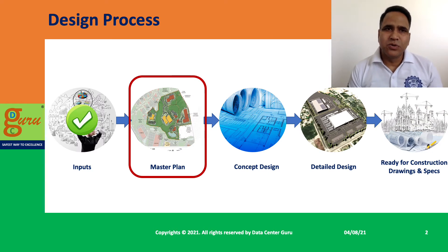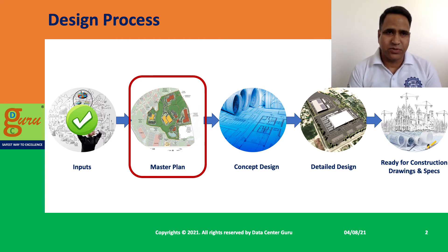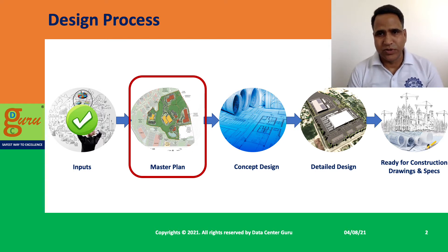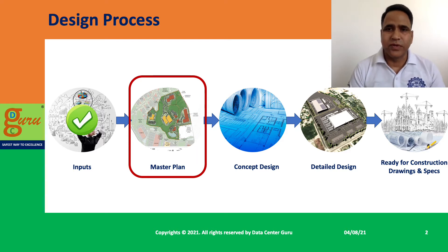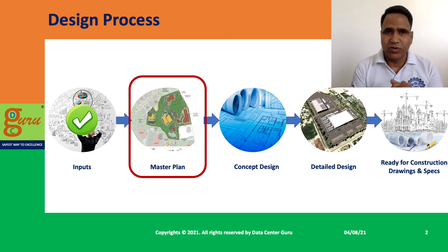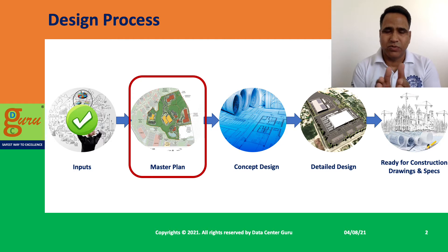This is the design process which I talked about in my last session. The first stage - design inputs - I have completed and explained what the different kinds of inputs are required from different stakeholders. In today's session we are talking about the master plan part of it, and then subsequently in my next session we will talk about concept design, detail design, and so forth.